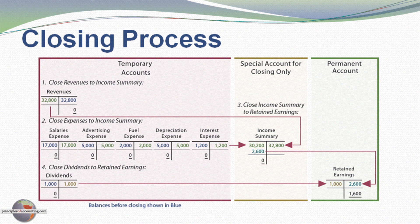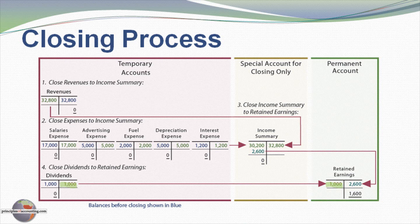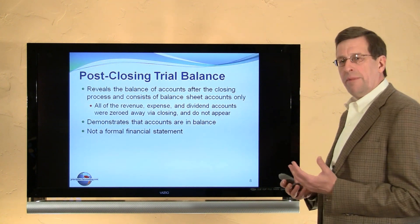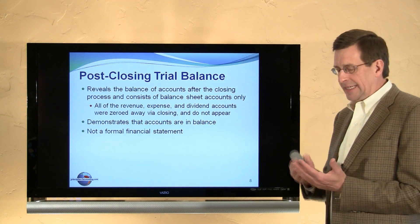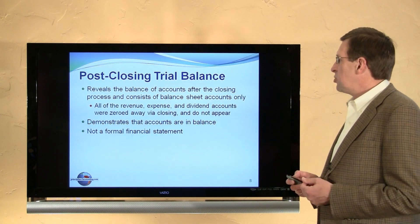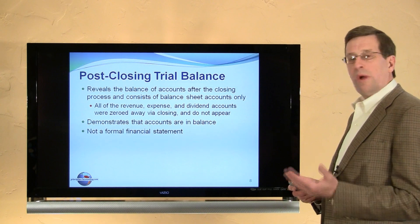To review the process, this slide may prove helpful. Here are our revenue accounts that I'm debiting $32,800 and crediting income summary $32,800. I in turn credit all of the expense accounts and debit income summary. Then I close the income summary account to retained earnings. Lastly, I close my dividends to retained earnings. That information then gives me a basis for preparing a post-closing trial balance. The only accounts that remain would be assets, liabilities, and the equity accounts — the end-of-period equity account balances. A post-closing trial balance reveals the balance of accounts after the closing process, with all revenue, expense, and dividend accounts swept away or zeroed out.